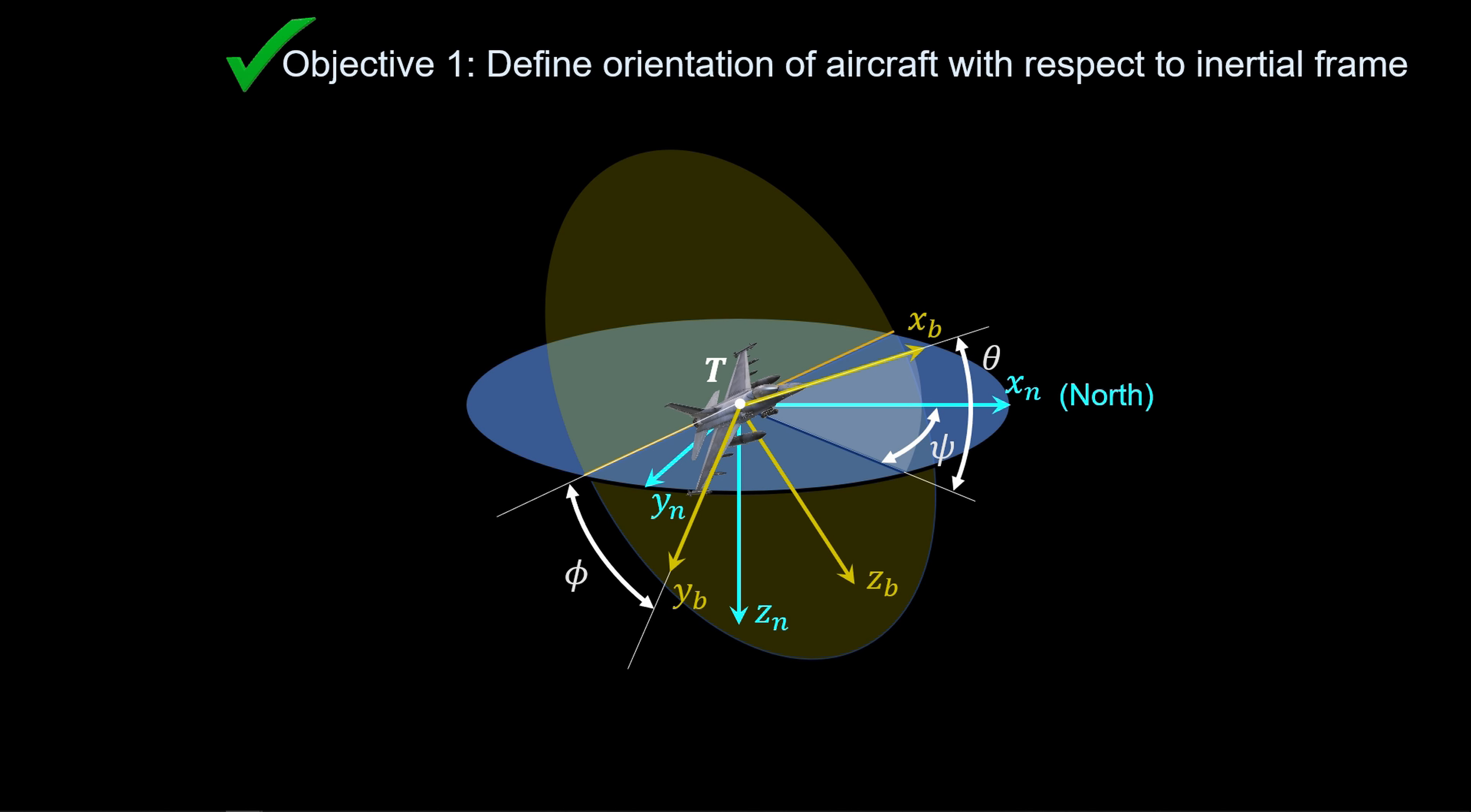The orientation of the aircraft with respect to the inertial frame is defined with three Euler angles, phi, theta, psi, representing aircraft roll, pitch, and yaw. In index notation, phi, theta, psi have indices 1, 2, and 3, respectively.